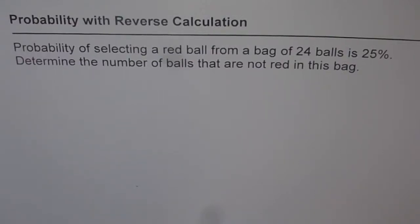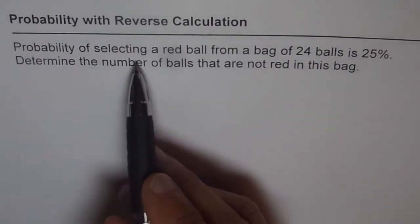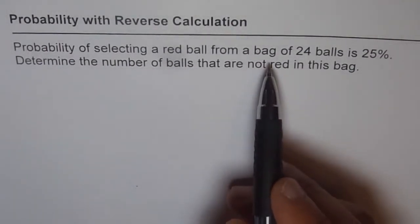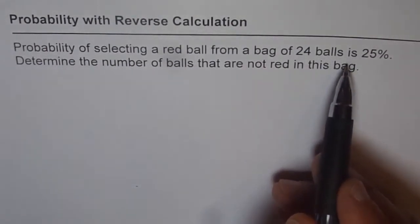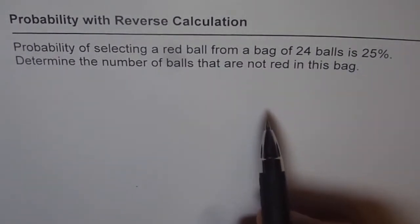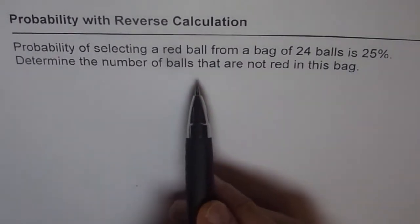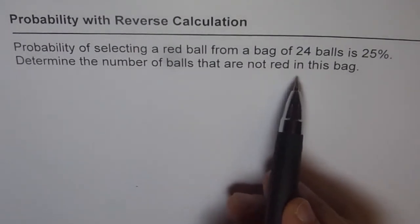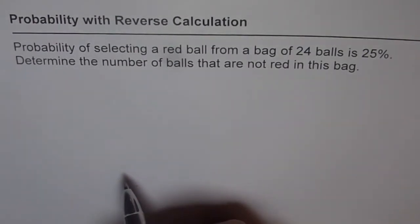This question involves probability with reverse calculation. We are given the probability and need to find the combination of things. The question is: the probability of selecting a red ball from a bag of 24 balls is 25 percent. Determine the number of balls that are not red in this bag.